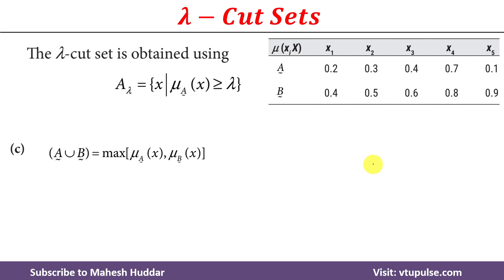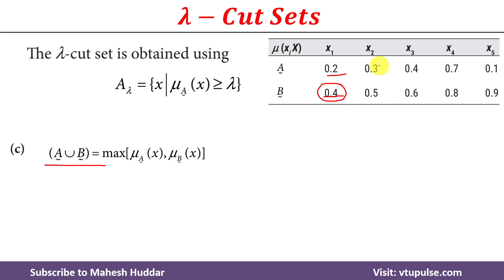Next we want to calculate the lambda cut set of the union of two fuzzy sets A and B. First we need to calculate the union. The union of two fuzzy sets A and B is always equivalent to the maximum of the membership values of x in fuzzy set A or fuzzy set B. For x1, the membership values are 0.2 and 0.4 — the maximum is 0.4, so 0.4 is present in the union. For x2, between 0.3 and 0.5, the maximum is 0.5. Similarly we find membership values for x3, x4, and x5 in the union.